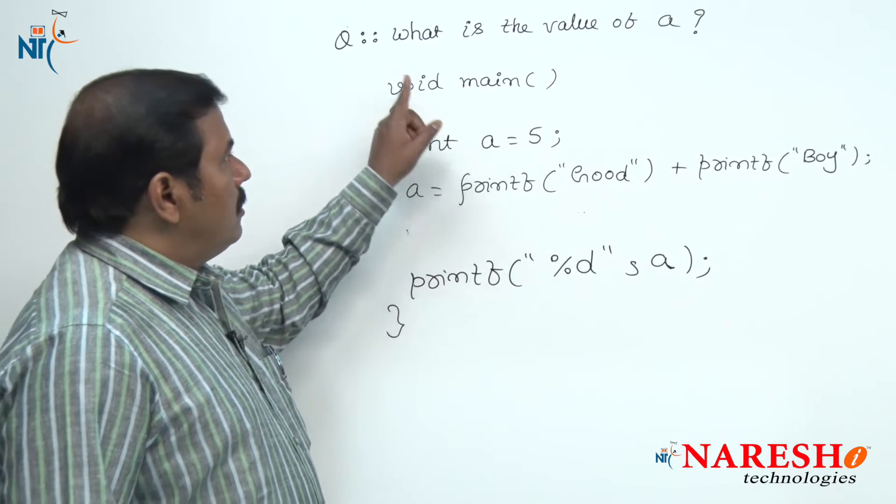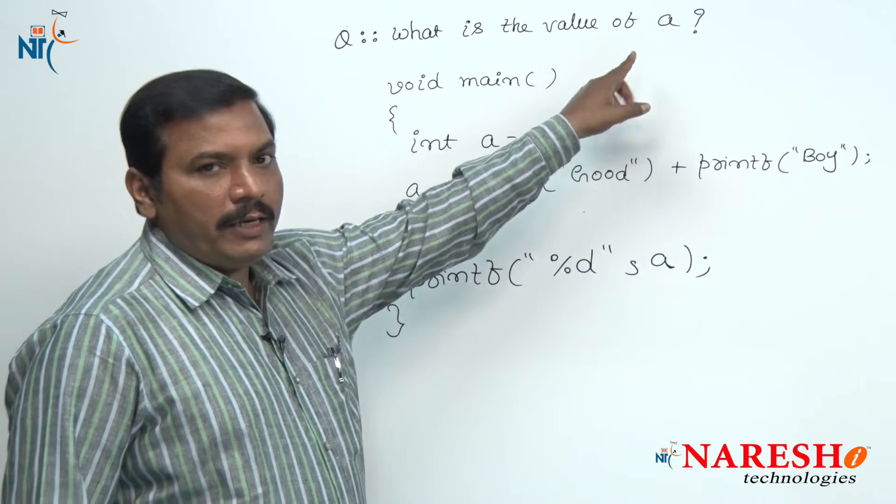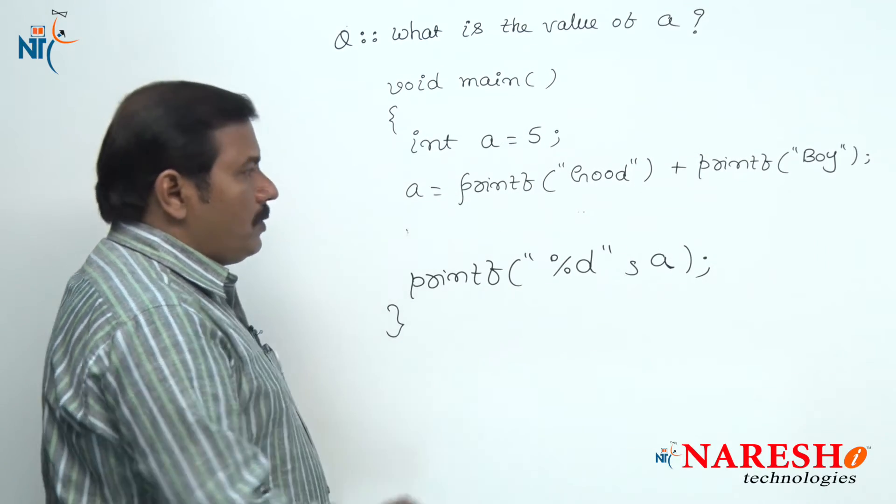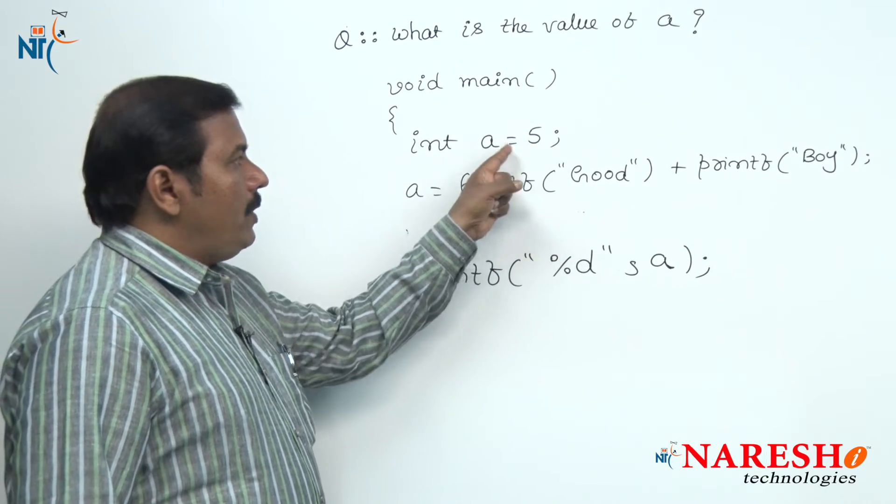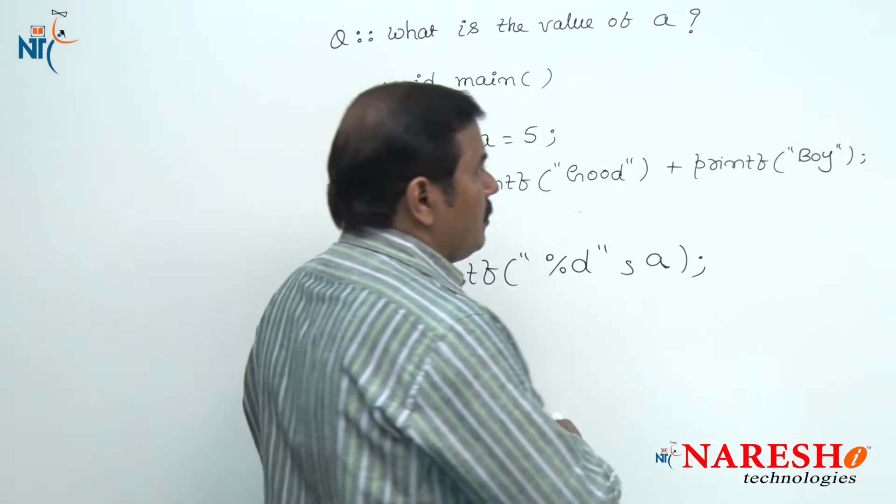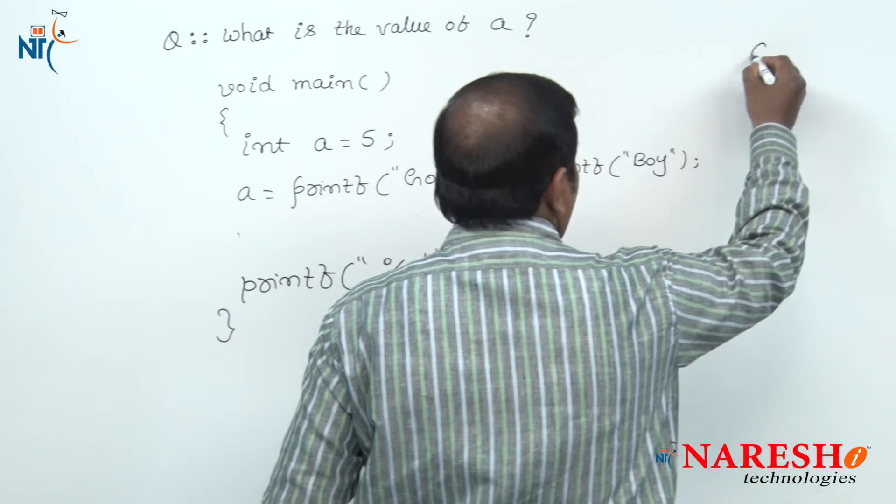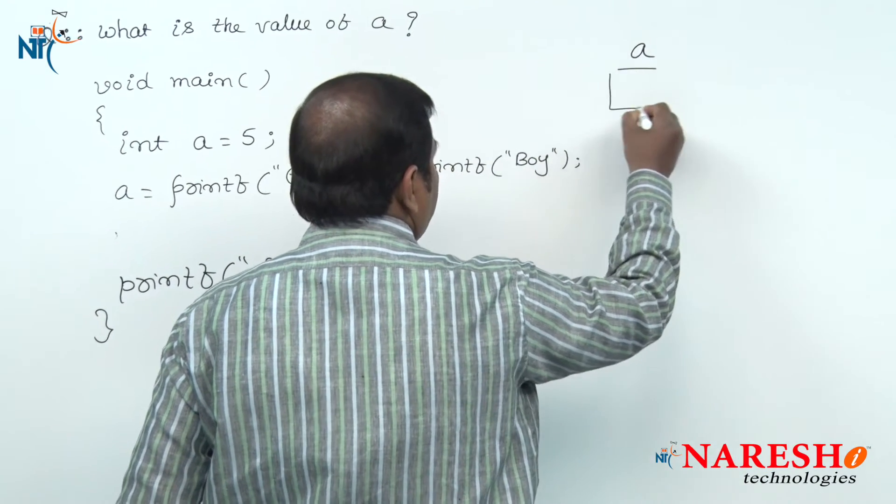Let us watch this question: what is the value of A? In this given code, the initial value of A is given as 5, hence the value held by variable A is 5.